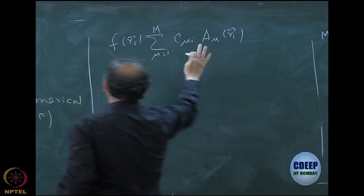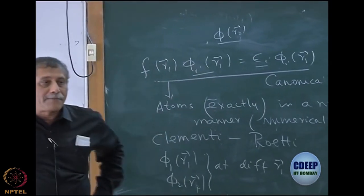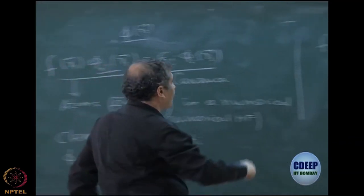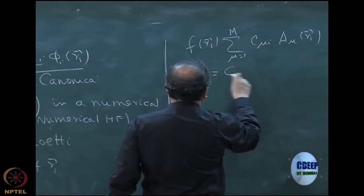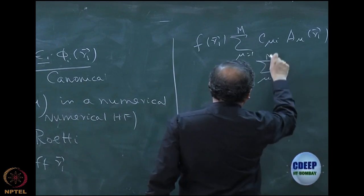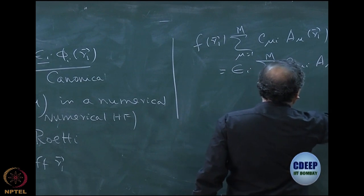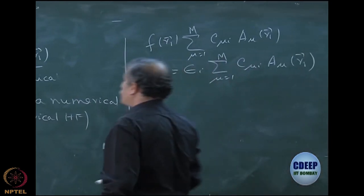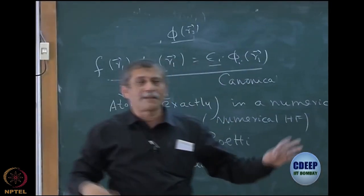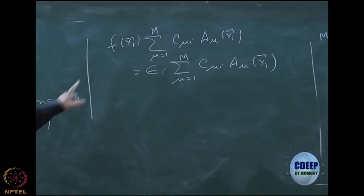F of R1, sum over mu equal to 1 to capital M, C mu I, A mu of R1, equal to epsilon I sum over mu equal to 1 to M, C mu I, A mu. Is it okay? Of course, this R1 can be R2, it can be R, does not matter. It is a one electron dummy variable, this R1.